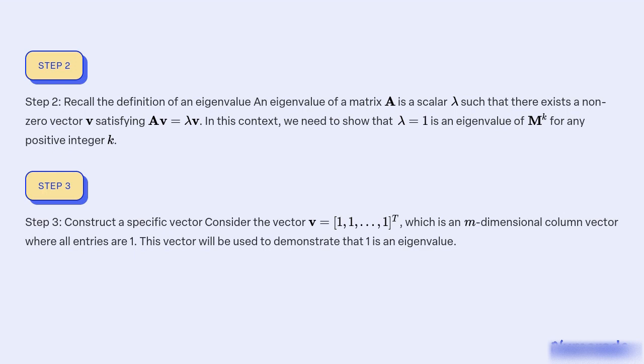Step 3: Construct a specific vector. Consider the vector v = (1, 1, ..., 1)^T, which is an m-dimensional column vector where all entries are 1. This vector will be used to demonstrate that 1 is an eigenvalue.